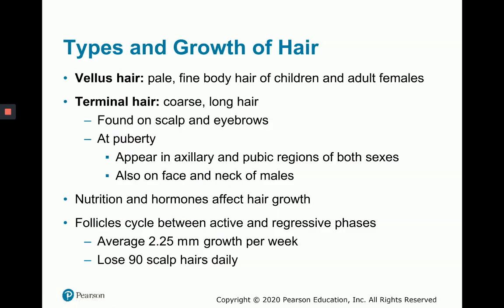There are different types of hair. Vellus hair is the pale, fine body hair of children and adult females, sometimes called baby fuzz. Terminal hair is the longer, coarser hair found on the scalp, eyebrows, and at puberty in armpits and pubic regions of both sexes, and on the faces and necks of males. Nutrition and hormone levels can affect hair growth. Average hair growth is about 2.25 millimeters per week, and on average a person loses about 90 scalp hairs daily.